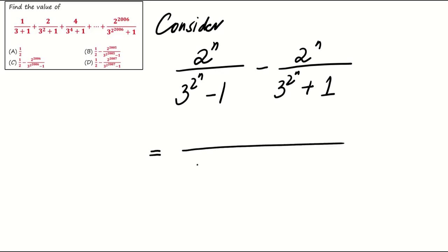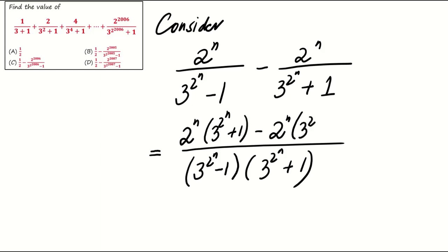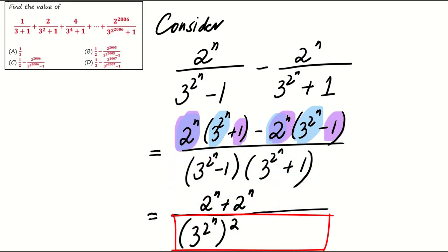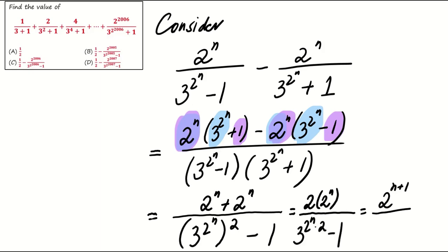By combining two fractions, we notice that the numerator simplifies, canceling out some terms, and leaving us with 2 to the power of n plus 1 eventually. For the denominator, we use the form of a minus b times a plus b. We apply the difference of squares formula, resulting in a squared minus b squared. And this allows us to express the fraction as 2 to the power of n plus 1 over 3 to the power of 2 to the power of n plus 1 minus 1.